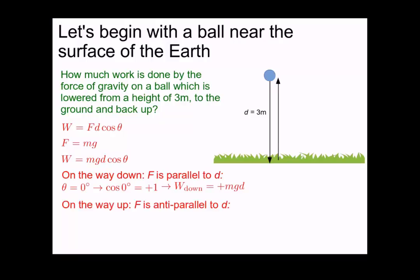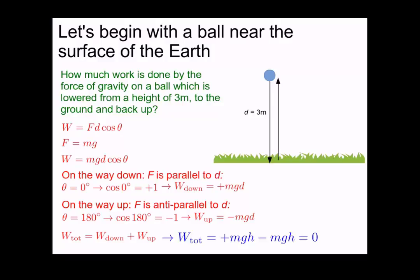On the way up, however, the force is down and the displacement is up, so the force and the displacement are anti-parallel, or the angle between them is 180 degrees. The cosine of 180 degrees is negative 1, and so the work done by gravity as the ball travels back up is negative mgd. The total work done by gravity on the entire loop is the sum of the work done on the way down plus the work done on the way back up, which in this case is equal to 0.